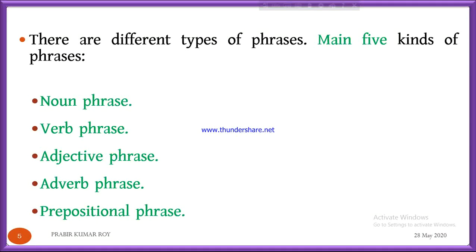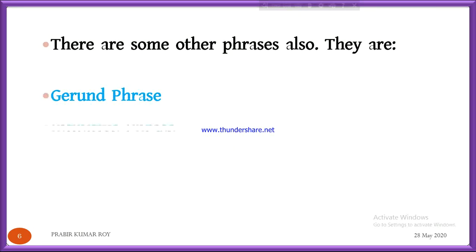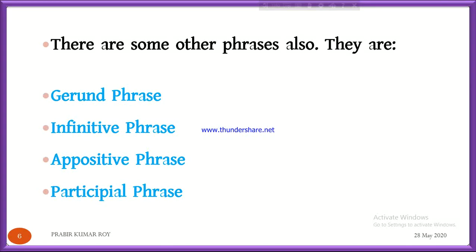Let us know the types of phrases. There are different types of phrases. The main five kinds are: noun phrase, verb phrase, adjective phrase, adverb phrase, and prepositional phrase. There are some other types also: gerund phrase, infinitive phrase, appositive phrase, and participial phrase.